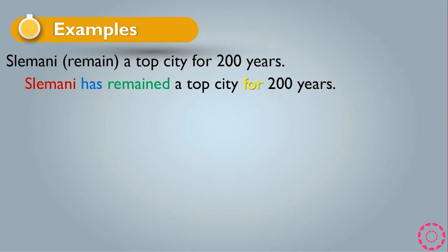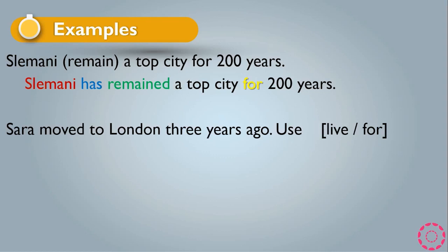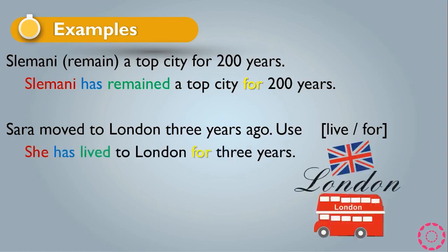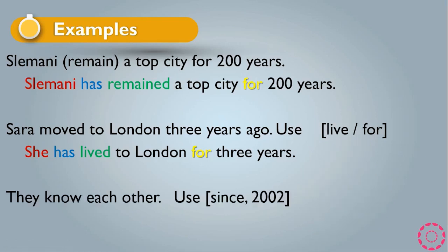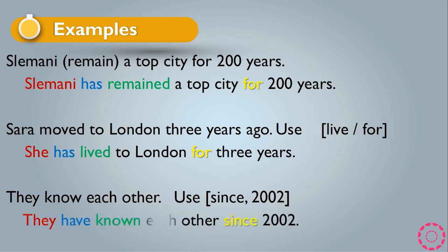Another example: 'Sarah moved to London three years ago' — use live and for. It becomes 'She has lived in London for three years.' You have to change live to its past participle: lived. Also: 'They know each other' — use since and the year 2002. It becomes 'They have known each other since 2002.'